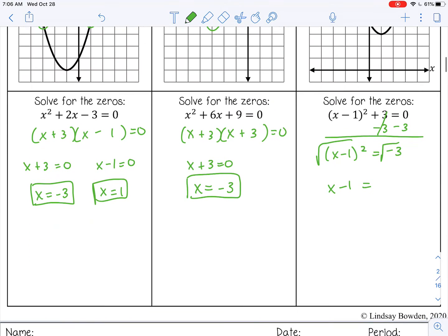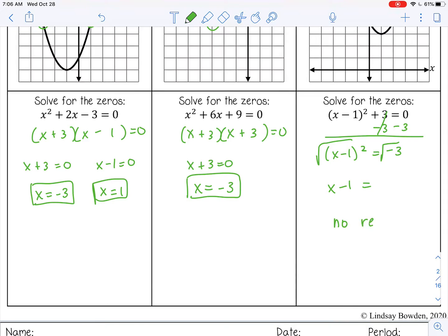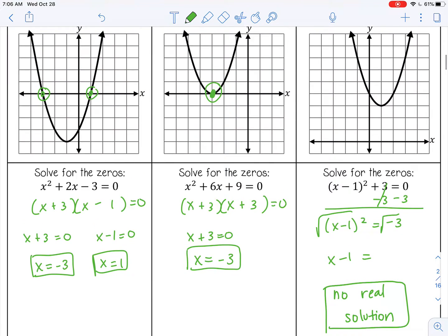Right here you have the square root of a negative number. There's no real number that will give you a negative number when you multiply it by itself. So when you're taking the square root of a negative, that means there is no real solution. And as you can see, there is no real root. This quadratic function does not touch the x-axis. It's above it.